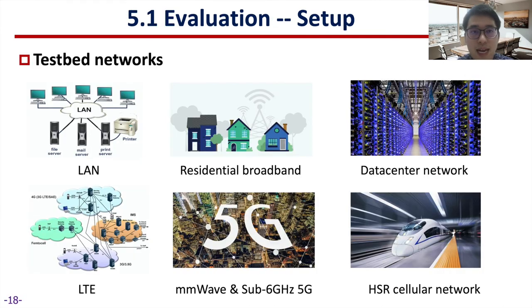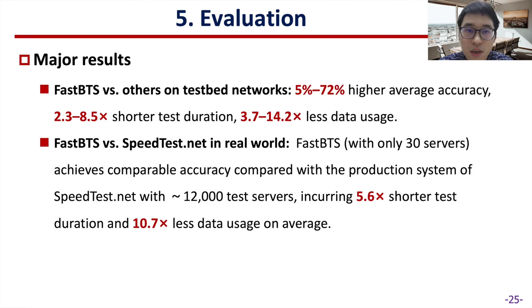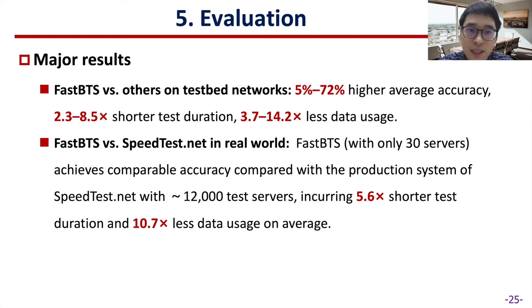We conduct comprehensive benchmarking experiments under diverse network scenarios, including local area network, residential broadband, data center network, RTE network, 5G network, and high-speed rail cellular network. Based on our evaluation, FastBTS achieves 5 to 72% higher average accuracy, 2.3 to 8.5 times shorter test duration, and 3.7 to 14.2 times less data usage. Moreover, FastBTS with only 30 test servers achieves comparable accuracy compared with the production system of Speedtest.net with about 12,000 test servers, while incurring 5.6 times shorter test duration and 10.7 times less data usage on average.